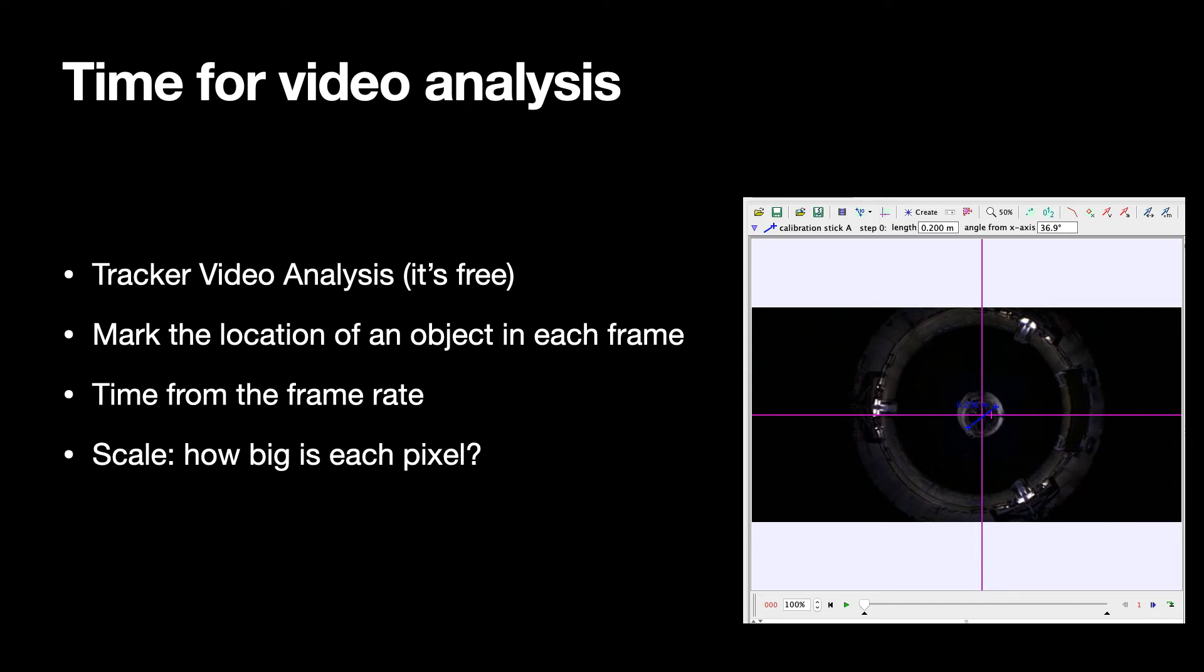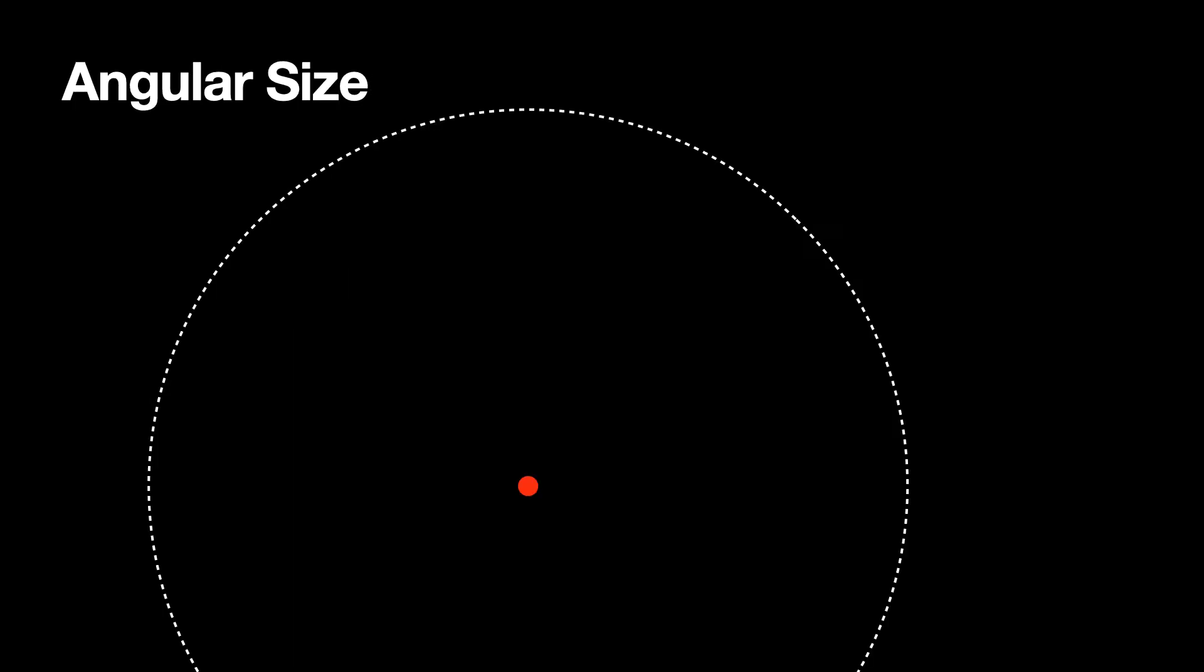And you can see that here, I can't really do that. I don't know how big this object is, and it's moving away from the camera. Normally, if it was moving perpendicular to the camera, this would be all great. So what do we do? Angular size. So here is a circle.